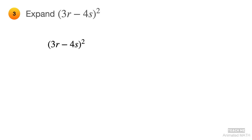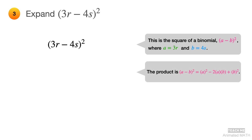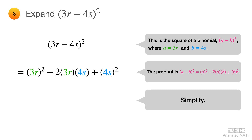This binomial follows the perfect square subtract times subtract pattern, which is a minus b squared. The only difference is that a is equal to 3r and b is equal to 4s. Its product is a squared minus 2ab plus b squared. So substitute 3r for all a's and substitute 4s for all b's. Simplify the expression, and the final answer is 9r squared minus 24rs plus 16s squared.